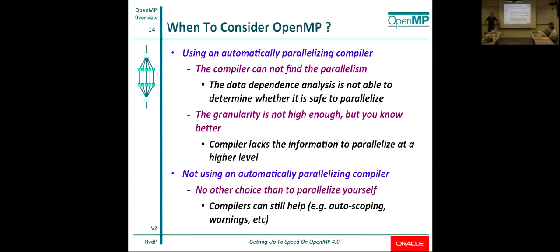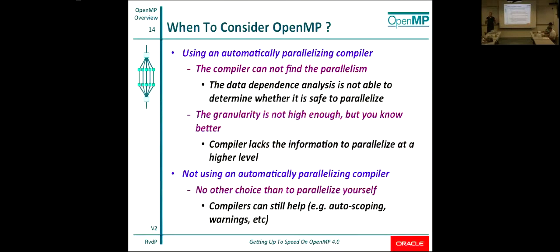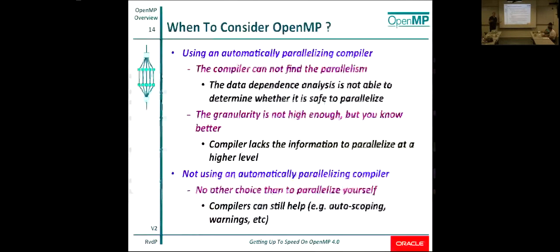Be aware that many compilers have options to give warnings. OpenMP is a very harsh model in the sense that you tell it to parallelize something and it will do so. But what if you made a mistake? What if that part was actually not parallel? Some compilers can issue warnings saying, are you sure you want to do that? So check your documentation to see what your compiler has available.